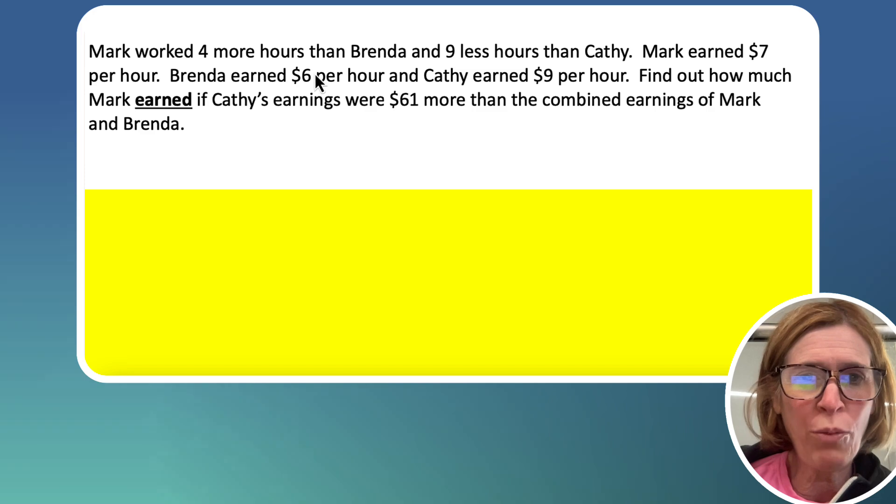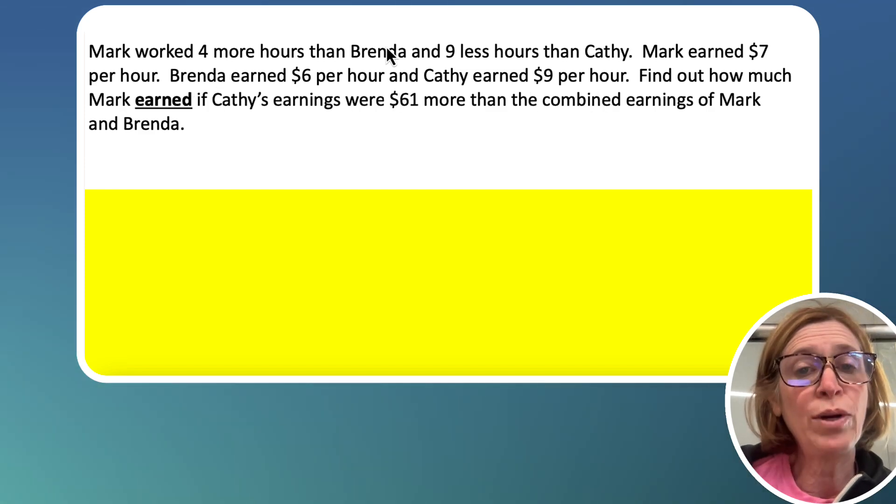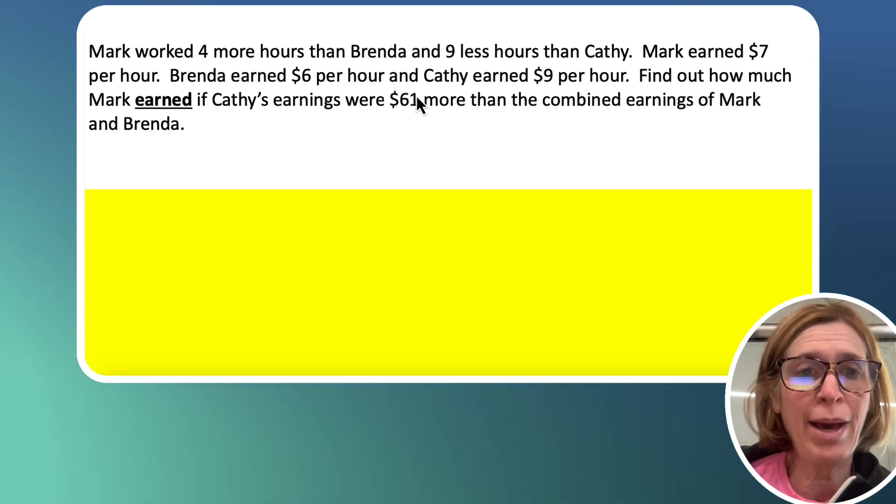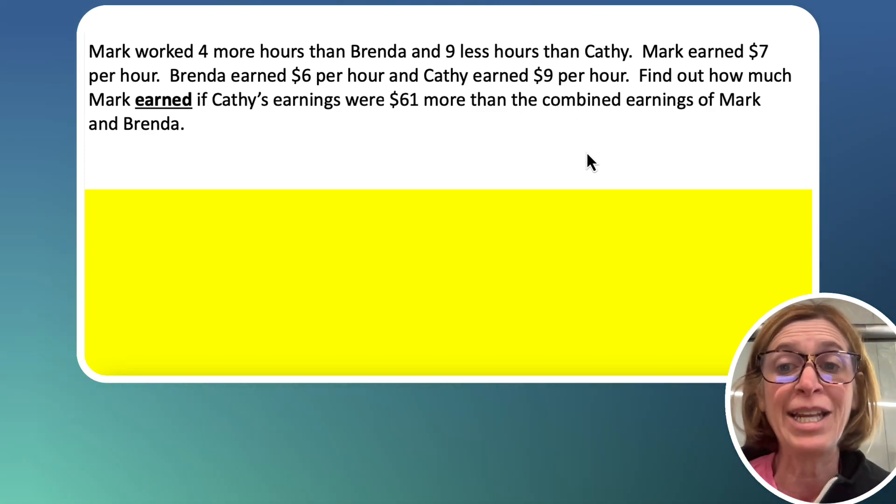Mark worked four more hours than Brenda and nine less hours than Kathy. Mark earned $7 per hour, Brenda earned $6 per hour, and Kathy earned $9 per hour. So this is a question where you have to really think about how they make their money, how they get an earning.